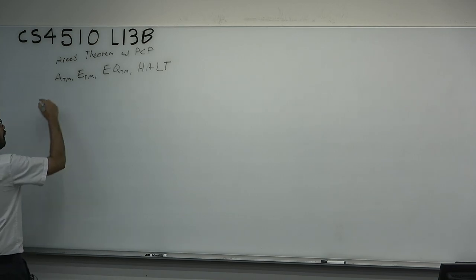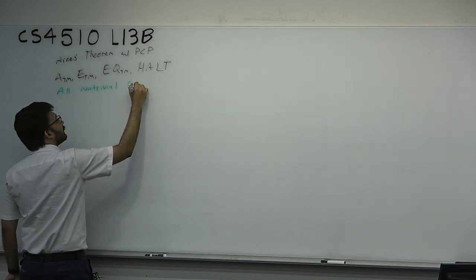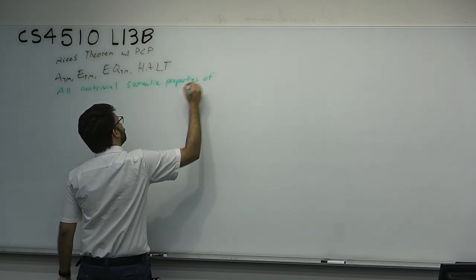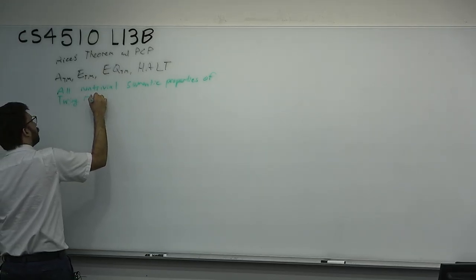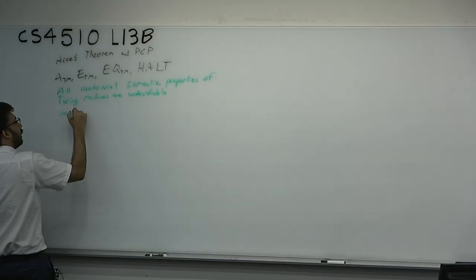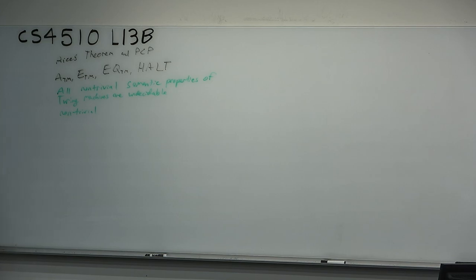Rice's Theorem basically says, in no short words, all non-trivial semantic properties of Turing machines are undecidable. First off, what does non-trivial mean? A non-trivial property is a property that not every machine has or hasn't. For example, consider the property that the Turing machine is a Turing machine — every Turing machine has that property. The property is non-trivial if there exists a Turing machine with the property and there exists one without. If it were total, it would obviously be decidable.